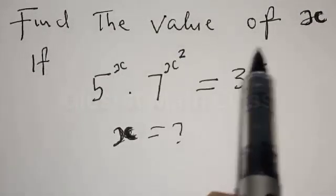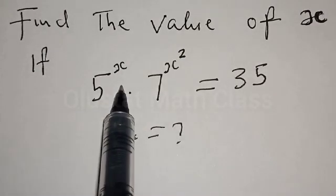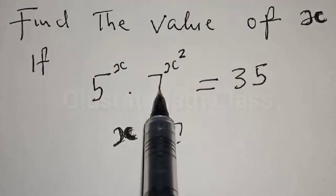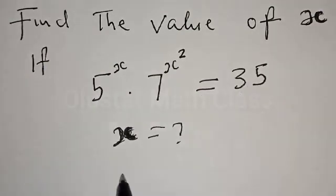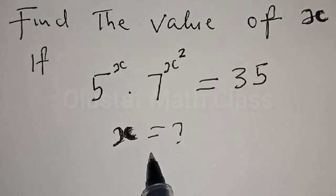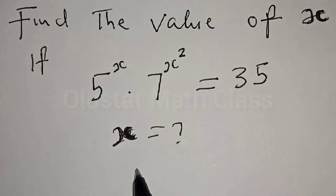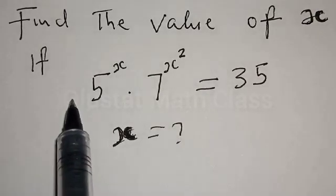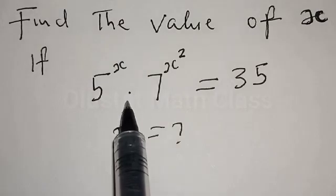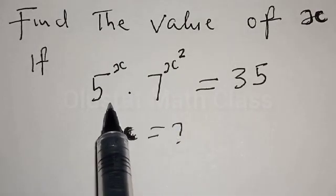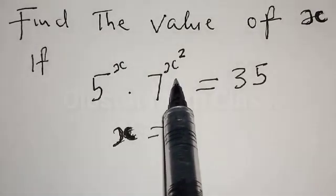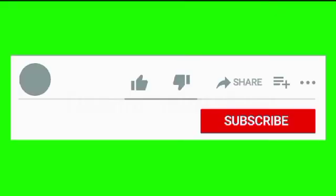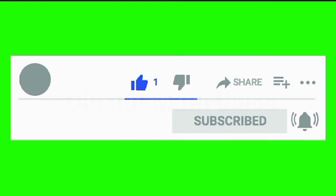Find the value of x if 5 raised to power x multiplied by 7 raised to power x squared is equal to 35. Hi everyone, welcome to my class. In today's class we want to look at how to find the value of x from this given exponential equation. 5 raised to power x multiplied by 7 raised to power x squared is equal to 35. But before we proceed, please don't forget to like, share, comment and subscribe.